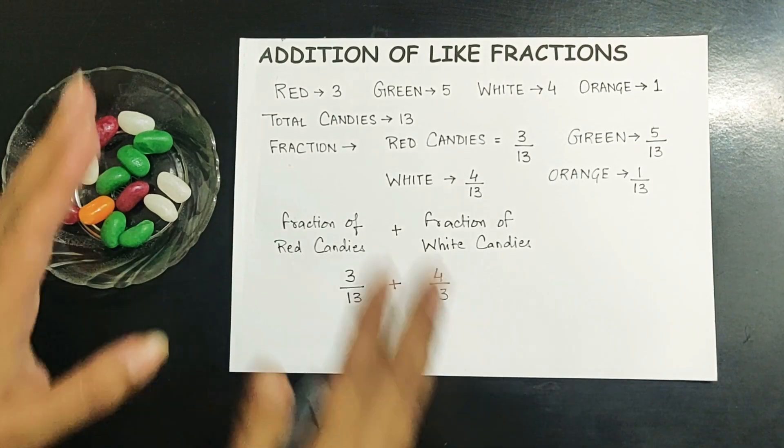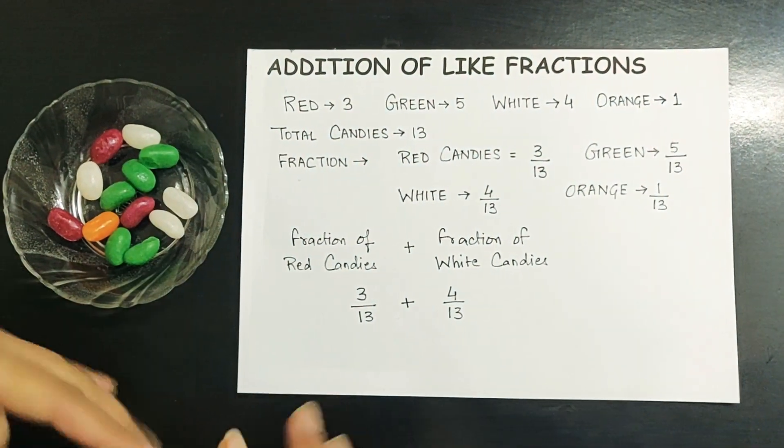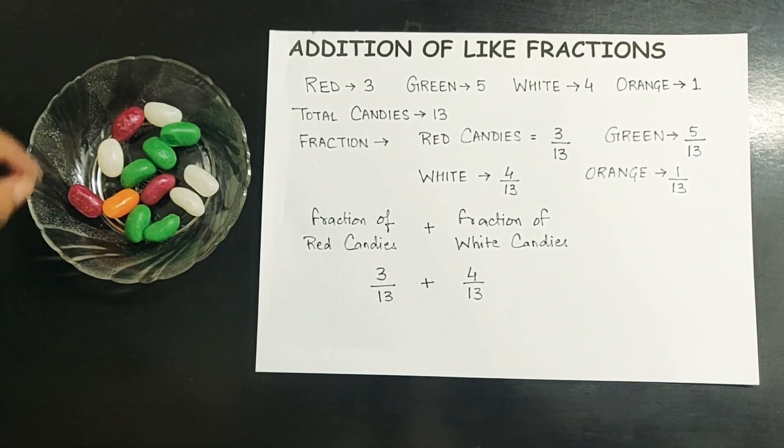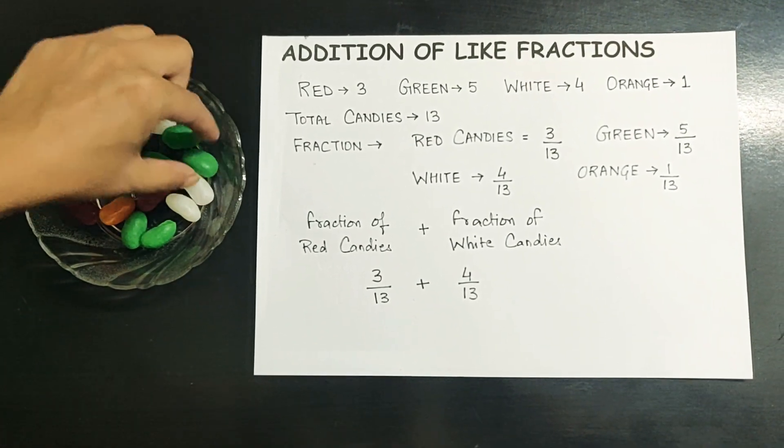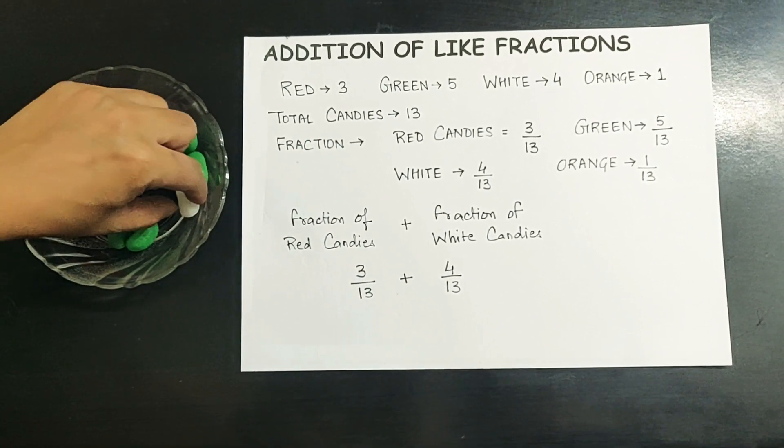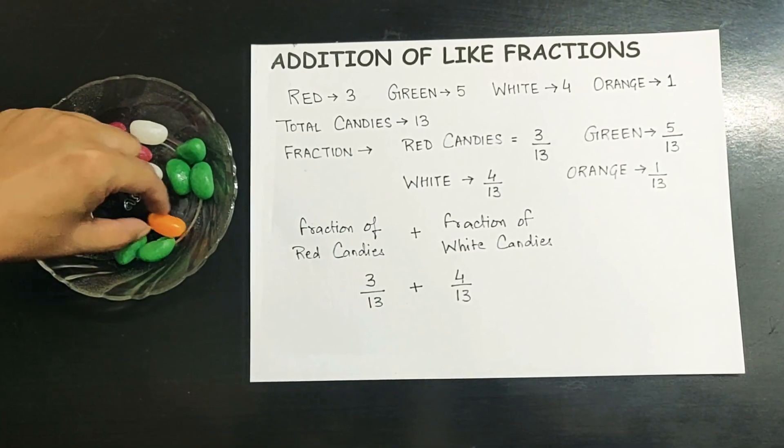Let us think about it. We do not know what is the concept of addition of like fractions. How can we find out the answer by just looking here? We can segregate them and make a group of red and white candies.